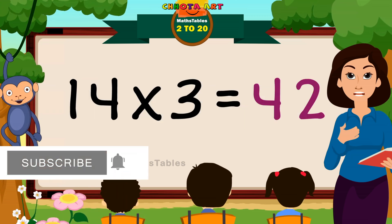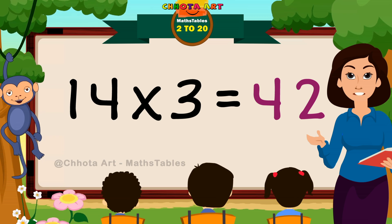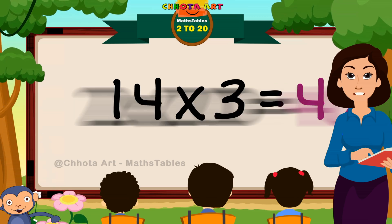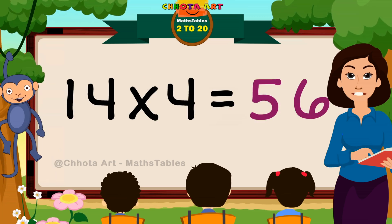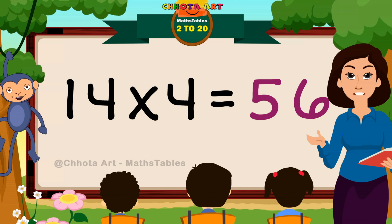14 threes are 42. 14 threes are 42. 14 fours are 56. 14 fours are 56.